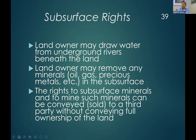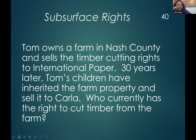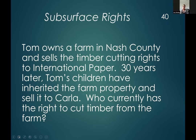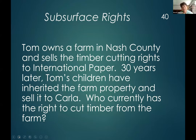This happens a lot, not with subsurface rights so much, but with rights to things like timber. In the eastern part of the state, you'll find a lot of farms where the timber rights have been sold to companies like Georgia Pacific or Weyerhaeuser — those companies that make lumber and paper. Farmers, to get extra money years ago, sold the rights — not just the trees themselves, but the rights to future trees on that property.